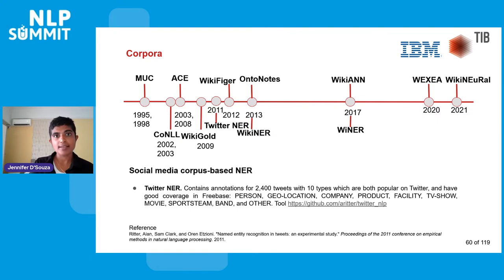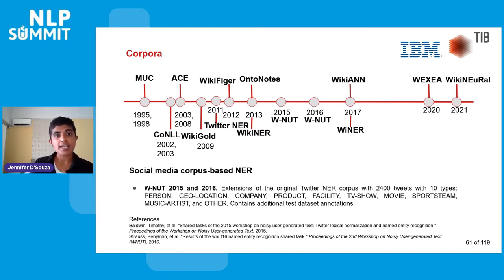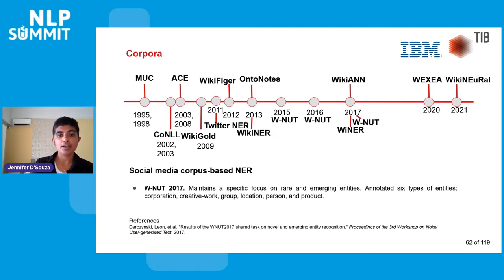New entity types are emerging in the social media context, such as sports team, movie, band, etc., commonly used in tweets rather than newswire. WNUT — the Workshop on Noisy User-Generated Text — was a shared task that leveraged the TwitterNER corpus and extended it with additional test dataset annotations. In 2017, a version of WNUT maintained a specific focus on rare and emerging entities.